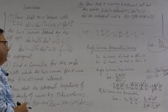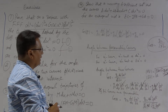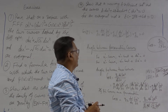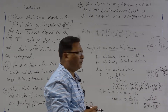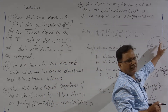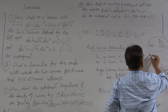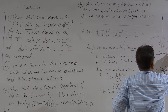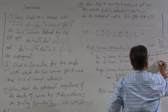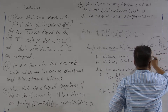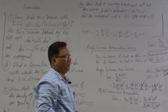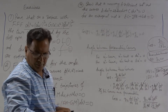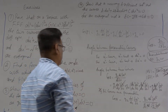Now, if the parametric curves are orthogonal, then g₁₂ must be 0. So parametric curves are orthogonal if and only if g₁₂ is 0. This is an important observation. This we will be using many times in other situations. So whenever parametric curves are orthogonal, g₁₂ is 0.